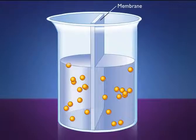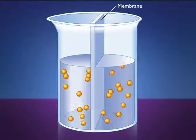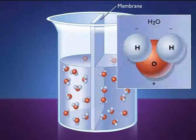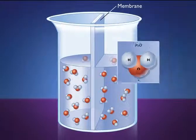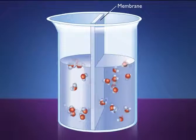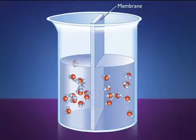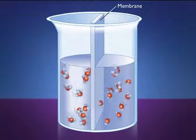Most polar molecules, such as sugars and proteins, cannot freely cross this lipid membrane. Although water molecules are polar, they are small enough to pass through the membrane freely. This special case of diffusion that involves the movement of water molecules across a membrane is called osmosis.